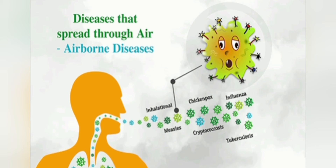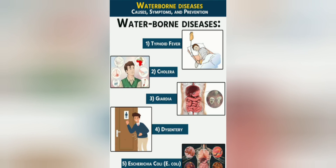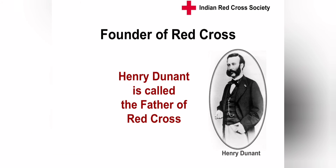Airborne diseases include influenza and tuberculosis. Waterborne diseases include typhoid fever, cholera, dysentery, and E. coli. The founder of the Red Cross is Henry Dunant, who is called the father of the Red Cross.